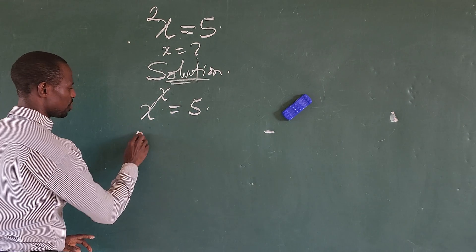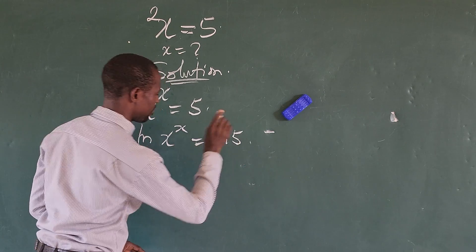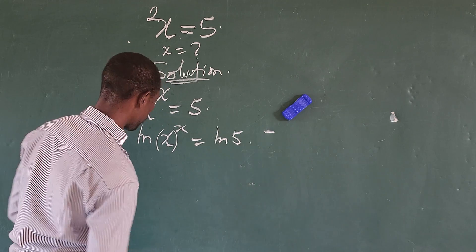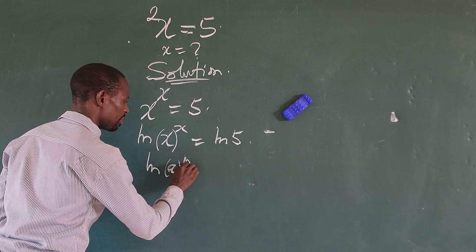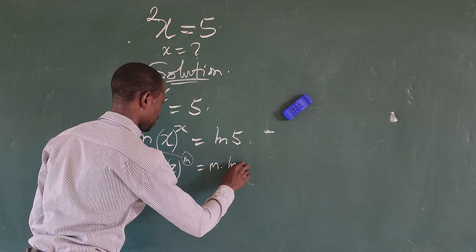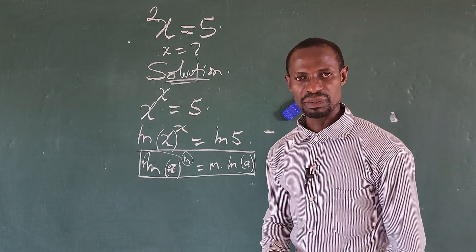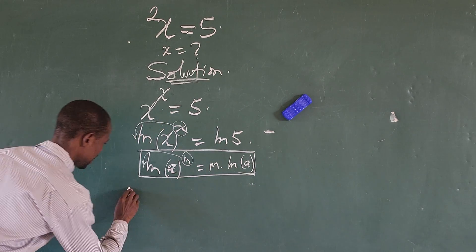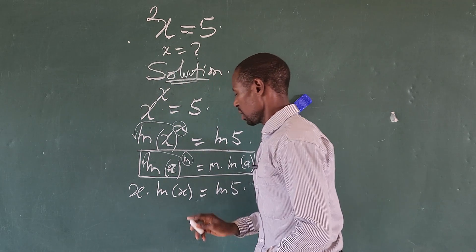What we do from here is take the natural log of both sides of the equation. So we will say ln of x to the power of x equals ln of five. Now, if we apply the law of logarithms — which says that ln of a raised to the power of m equals m times ln of a — we can move this exponent down. This gives us x times ln of x equals ln of five.